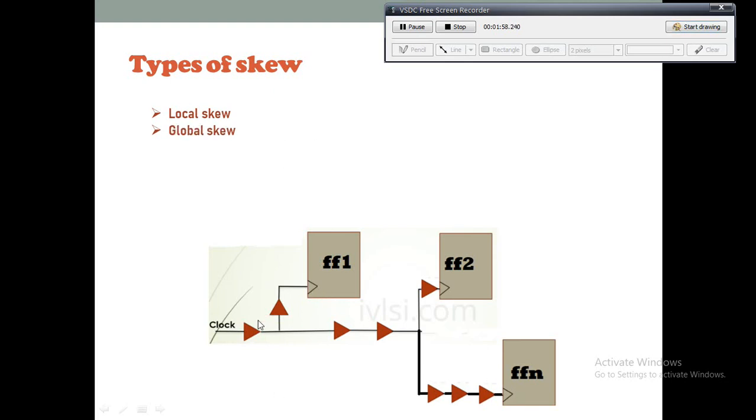So suppose, what will be the global skew in this case? I already told FF1 will take two clock buffers, so it is 20 picoseconds. And here one, two, three, four, five, six buffers, so it will be 60 picoseconds. So the global skew will be 60 minus 20, that will be 40 picoseconds.